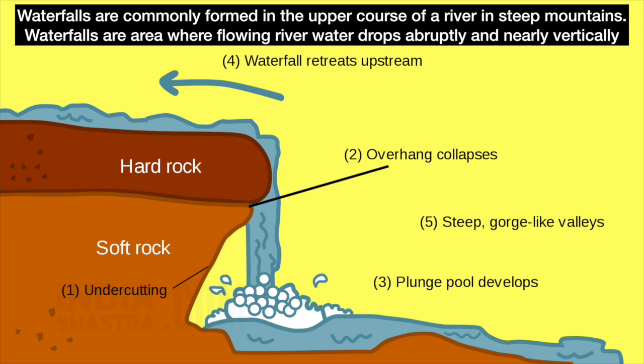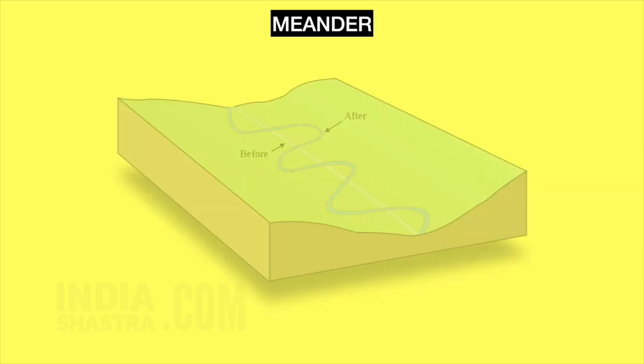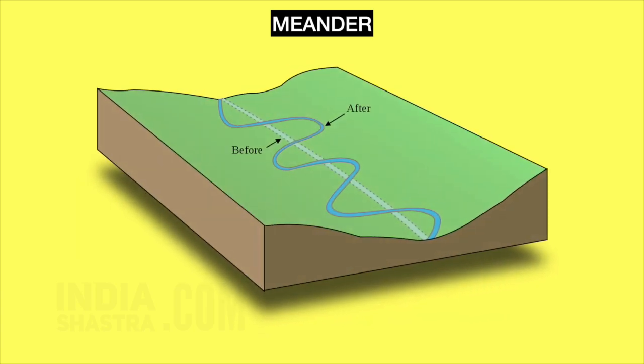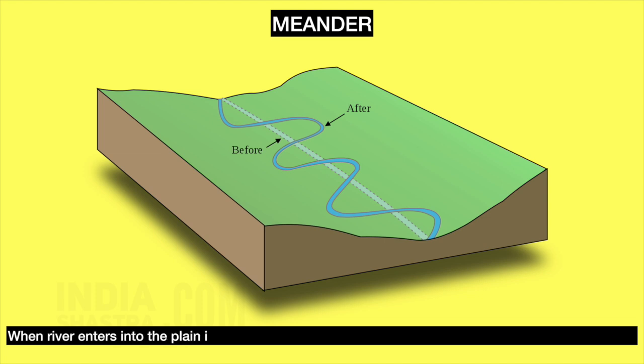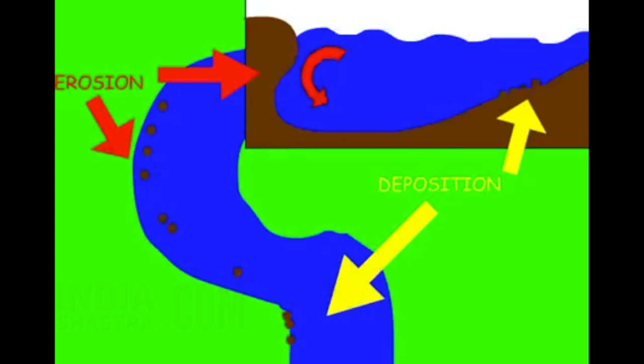A waterfall may also be termed as a falls or sometimes a cataract. The second is the meander. When a river enters into the plain, it twists and turns forming a loop. These bends are known as meanders. Meanders lead to further development of oxbow lakes — crescent-shaped lakes formed by the meandering rivers. These happen because of continuous erosion and deposition along the sides of the meander.